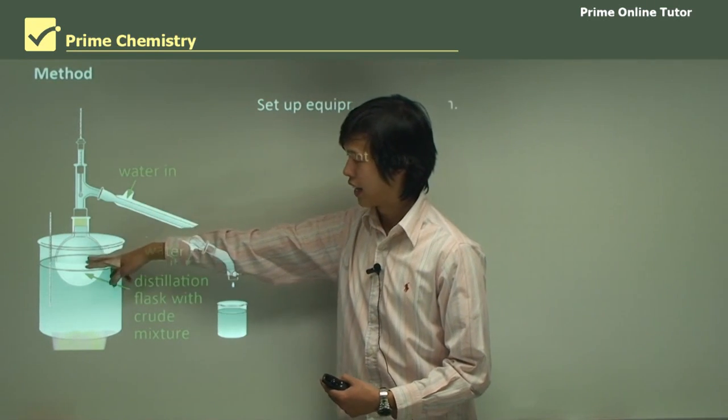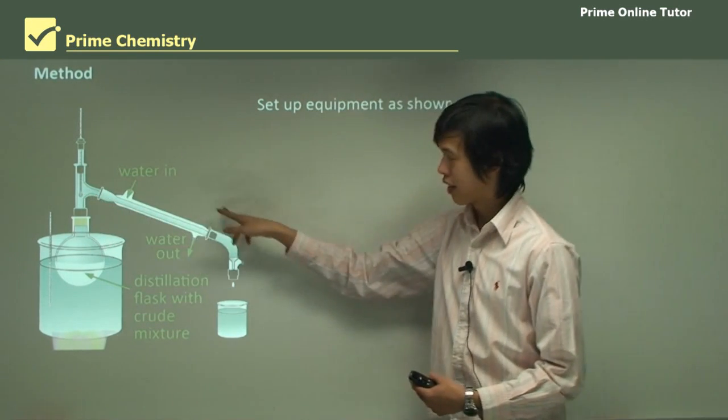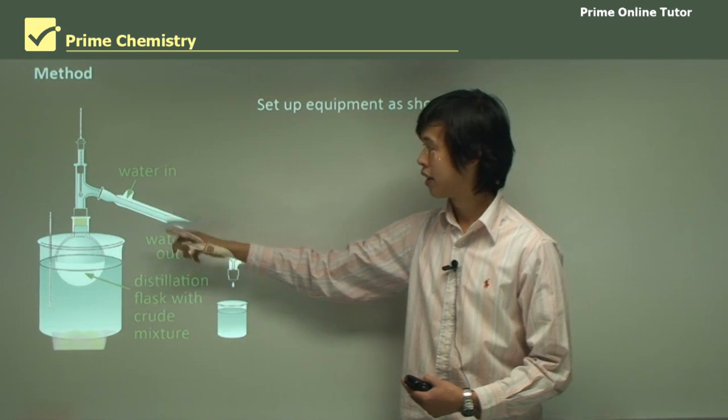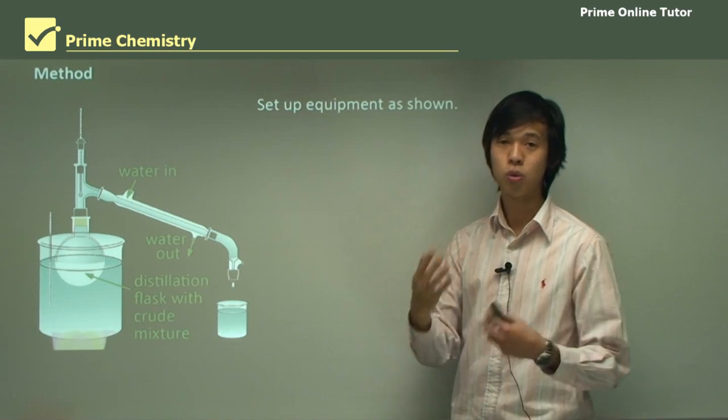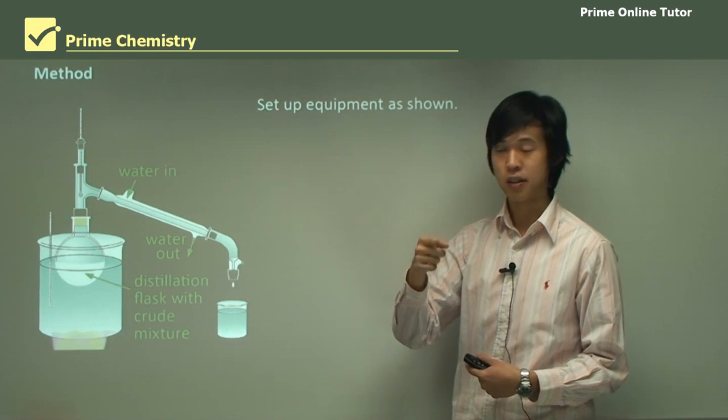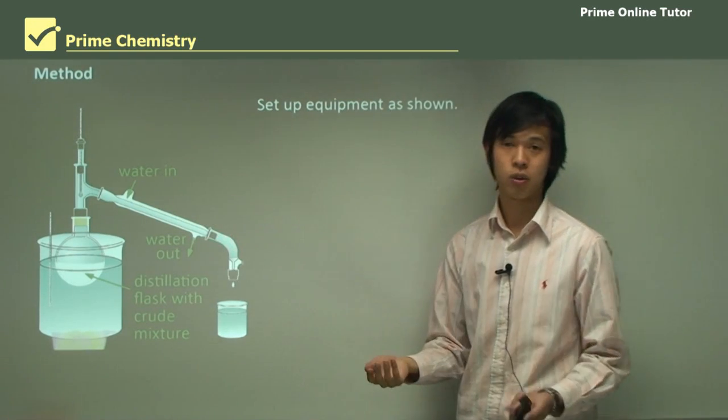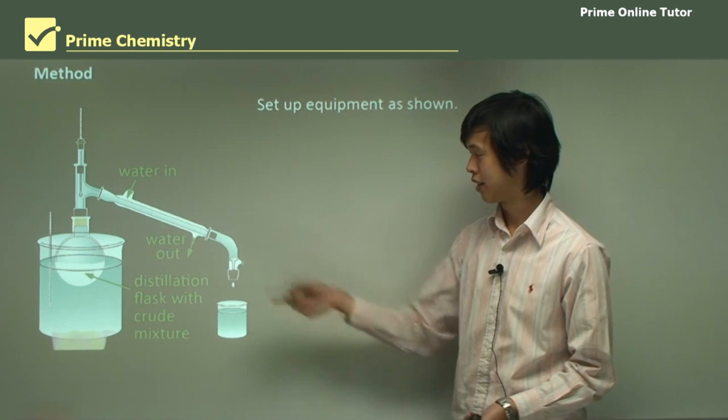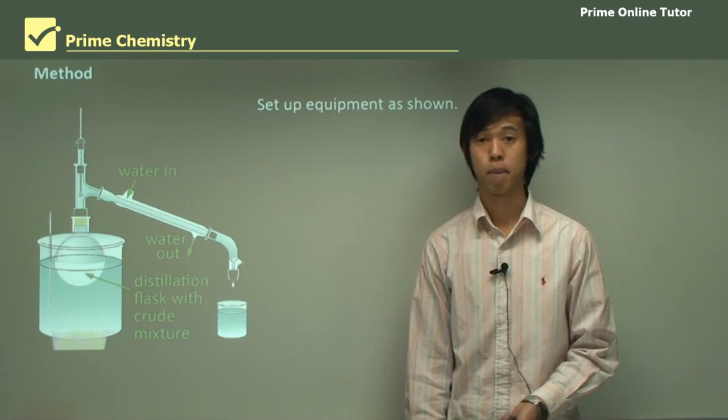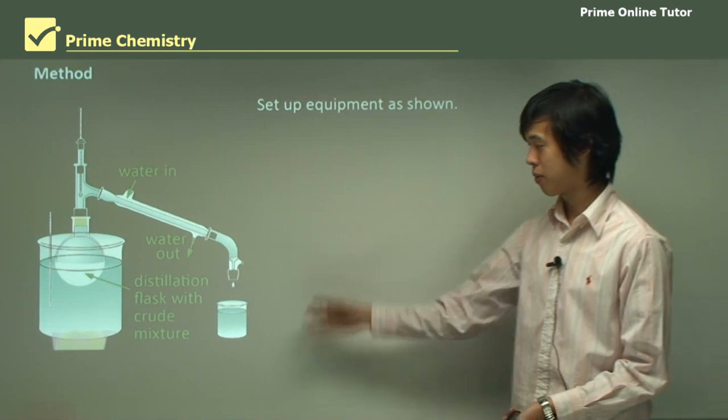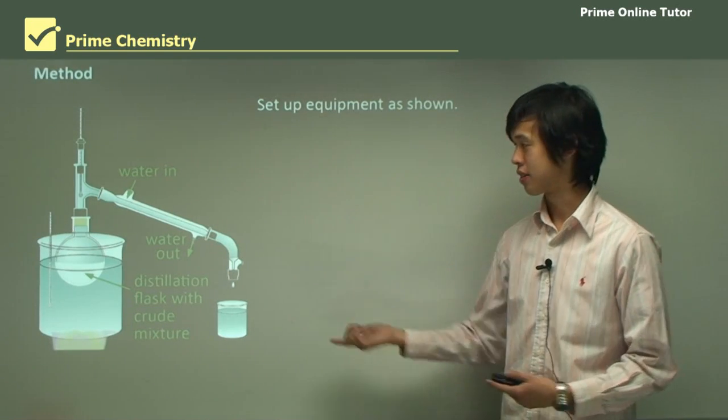And so here is our distillation flask and the crude mixture we're talking about is just our ethanol water mixture. So we're just going to pour all our mixture in here and then heat it using this water bath and Bunsen burner. Now when it evaporates it comes up into here, our condenser tube, and our condenser tube essentially has cold water flowing around it, which will cool the inner part of this tube which will then cause the gases to condense. Then once they condense they'll drip down into our collection beaker down there.